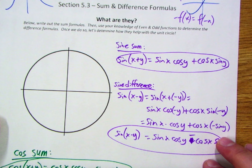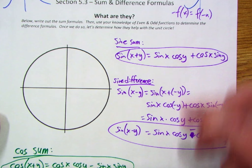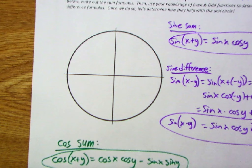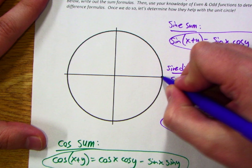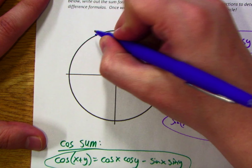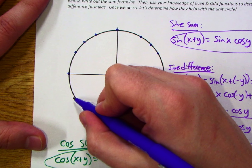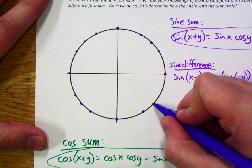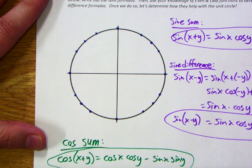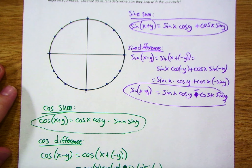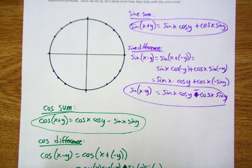And there we have it — our four main formulas: sine sum, sine difference, cosine sum, and cosine difference. Now let's reference the unit circle, because this has a lot to do with angle measures. We know at 0, 30, 45, 60, 90, 120, 135, 150, 180, 210, 225, 240, 270, 300, 315, and 330 — back around to 360 — all of these angle measures are known to us. Let's think about what these new angle sum and difference formulas really allow us to do.